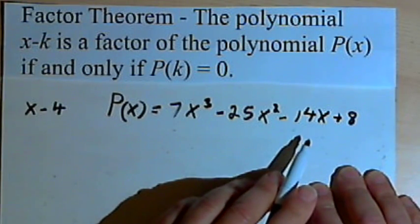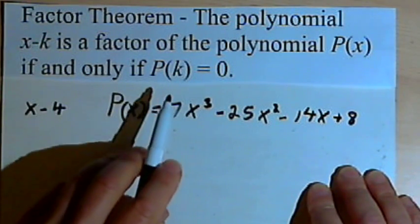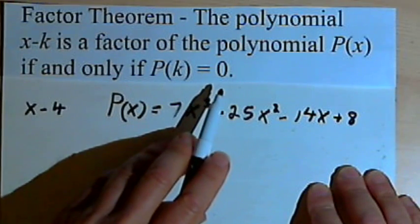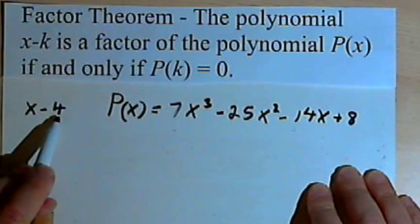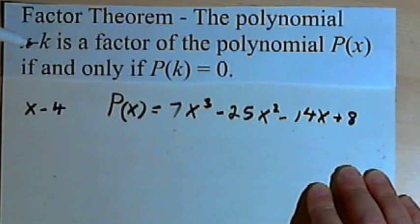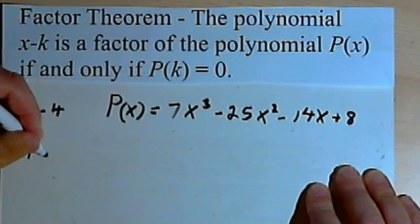So the factor theorem says that if P(k) equals zero, then it's a factor. Well, k is 4, since I replaced the x minus k with x minus 4. So I want to find out what P(4) is.